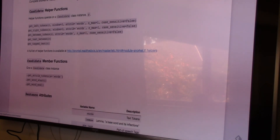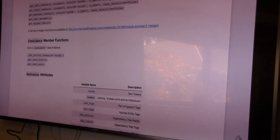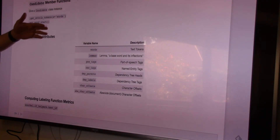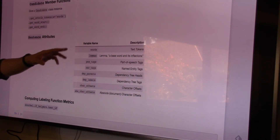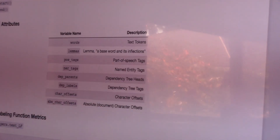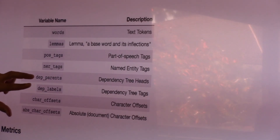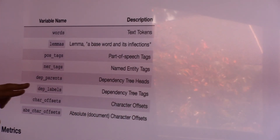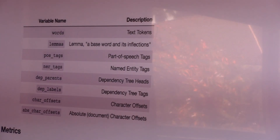The next notebook shows additional helper objects that make writing labeling functions easier. If you're interested in what's available in the sentence object: you have the words, lemmas (the base word without inflections), part-of-speech tags, NER tags, syntax trees, and absolute offsets in the sentence — it's all available to you in the sentence object.